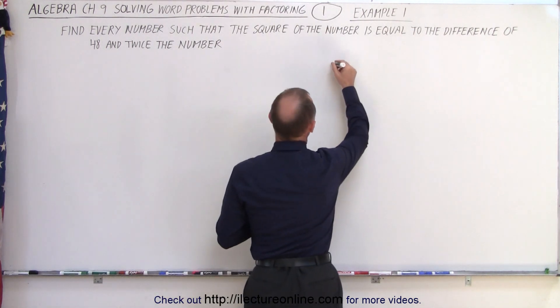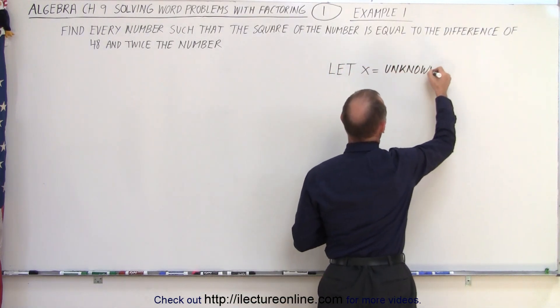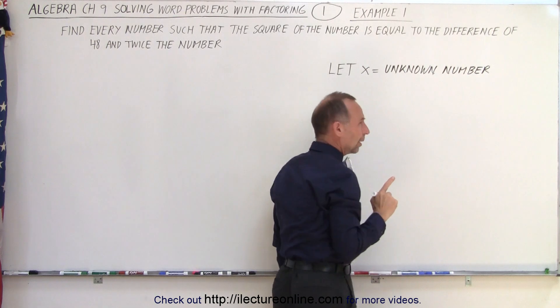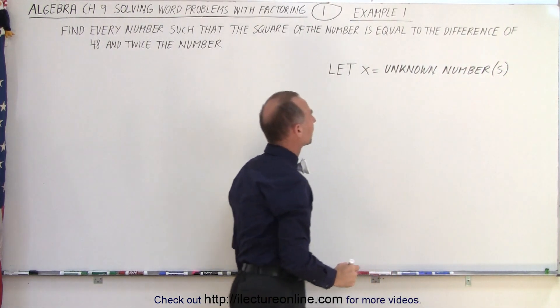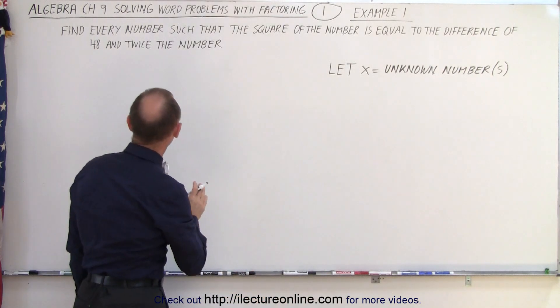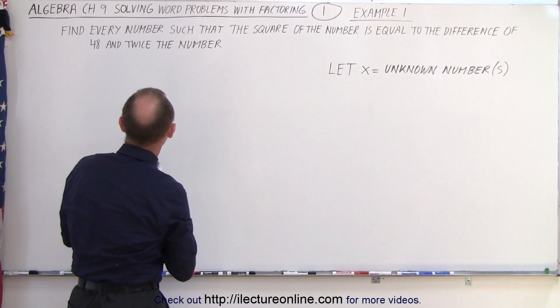Let x equal that unknown number. Since we're looking for more than one number probably, let's put an s behind it. Now we need to come up with an equation, so we're going to try to figure out what that equation is.